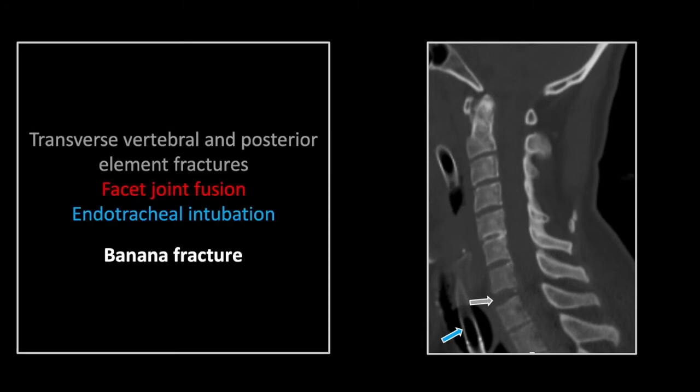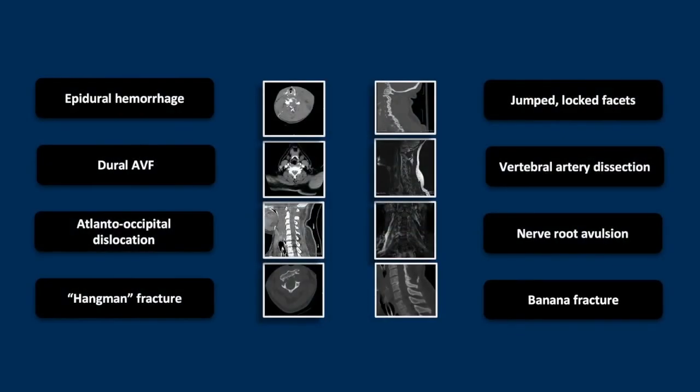That is a banana fracture, a complication of ankylosing spondylitis, typically post-traumatic, and often associated with endotracheal intubation. That concludes this session on spine trauma.